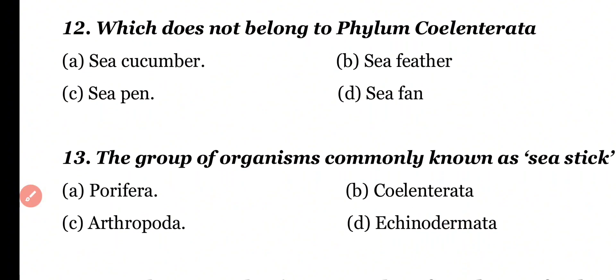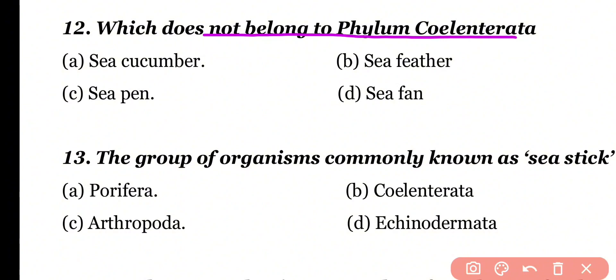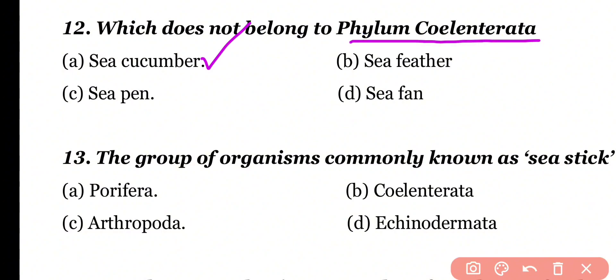Question number 12: Which does not belong to the phylum Coelenterata? Sea cucumber, sea feather, sea pen, or sea fan. Correct answer is option A. Sea cucumber belongs to phylum Echinodermata; it does not belong to phylum Coelenterata.